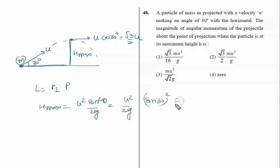Now we put the values in this formula. L equals r perpendicular times momentum. R perpendicular is h_max, that is u squared upon 8g. Momentum is mass times velocity. Mass is m, velocity is root 3 by 2 times u.